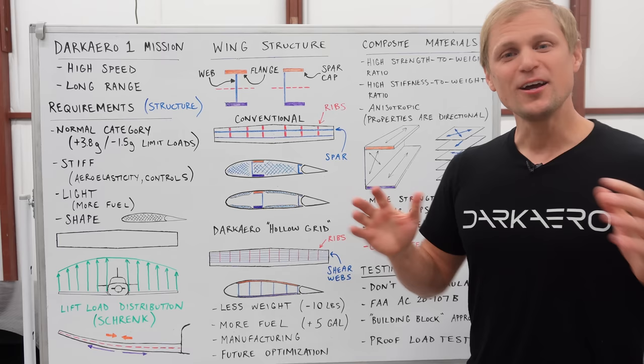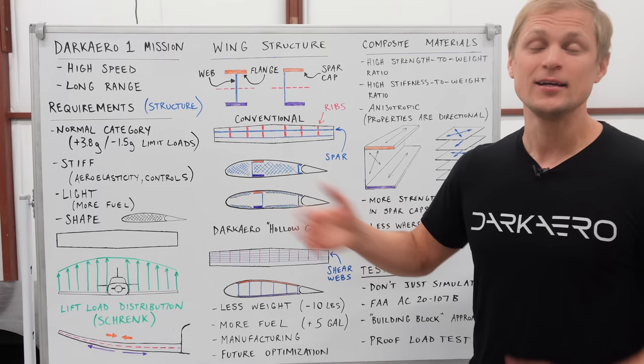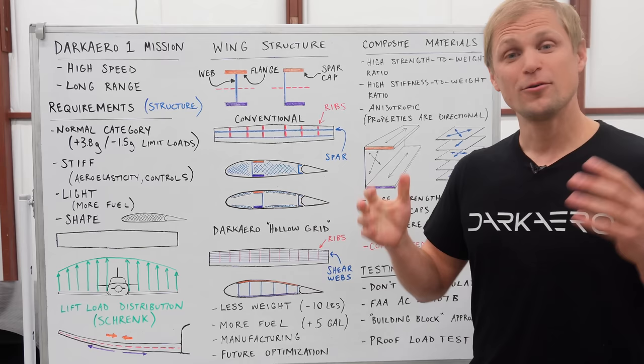Okay, that's a high level overview of the structures in the wing of the Dark Arrow 1. Next up we're going to talk about the manufacturing—how do we actually build composite structures like the wing. We're going to save that for the next video and leave it here for now. So thanks for watching. We'll catch you in the next one.